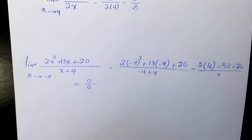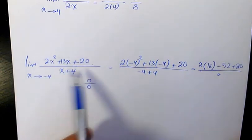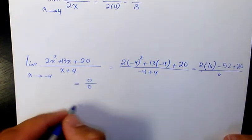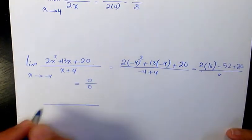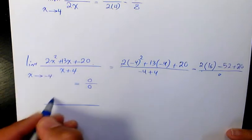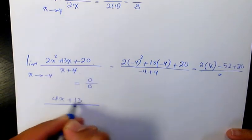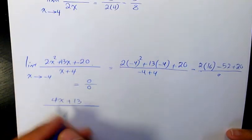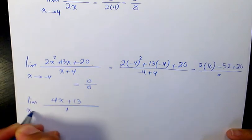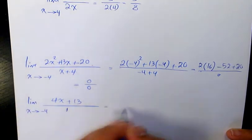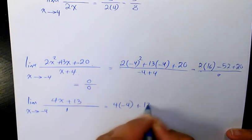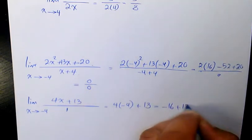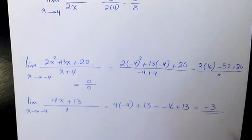Again we need to use L'Hospital's rule. Derivative of numerator divided by derivative of the denominator. That's what L'Hospital's rule means. The derivative of the numerator is going to be 4x plus 13. The derivative of the denominator, derivative of x plus 4, is going to be 1 when x is approaching negative 4. So that's going to be 4 times negative 4 plus 13. That's negative 16 plus 13, which is going to be negative 3. That's going to be the final answer.